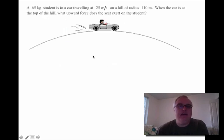Let's take a look at a different type of a question. So again, a car traveling along a circular path. This time, the circular path is a vertical circular path. So it's traveling over the top of a hill. And we have our 65 kilogram student in the car and it's traveling horizontally over this circular path at 25 meters per second. And the radius of the circle is 110 meters. And we're asked, what is the normal force acting on this person?